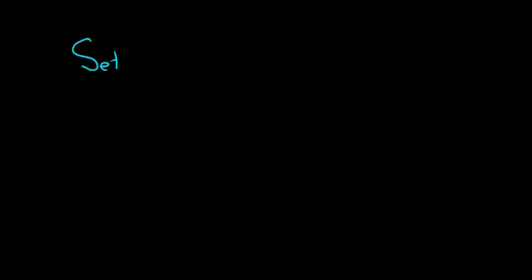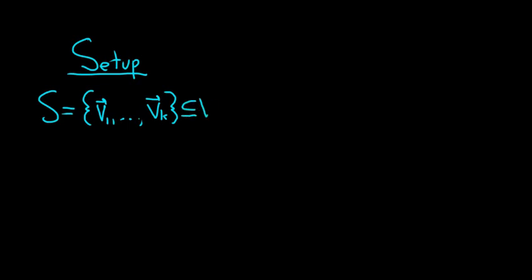So here is the setup. S here will be a set of vectors which we'll call v sub 1 to v sub k. It's a set of vectors and it's a subset of a vector space which we'll call V. So V here is a vector space. Then we're also going to have W. So W is a subspace of V.